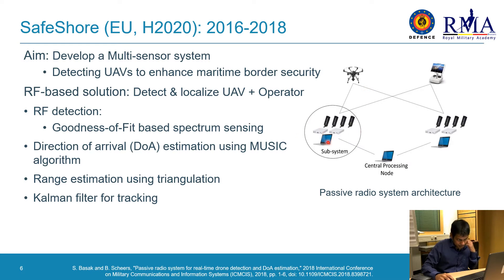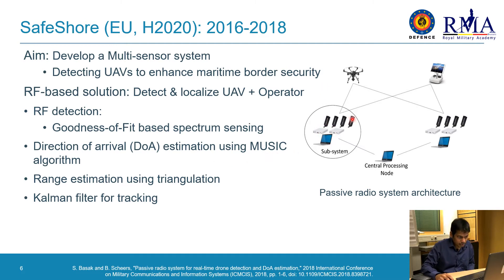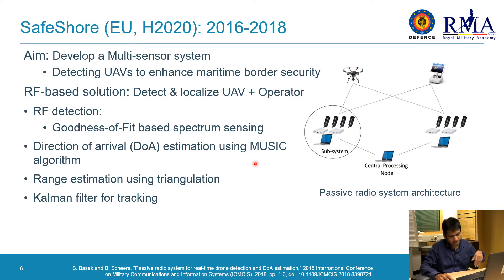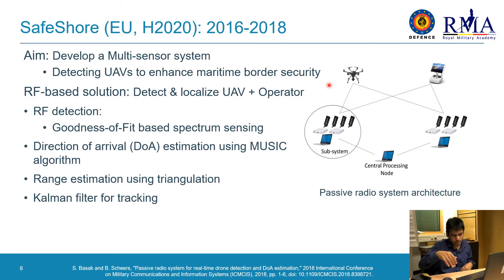We detected the presence of a drone using a goodness-of-fit based spectrum sensing algorithm. After detecting the presence of a drone via RF detection, we performed direction-of-arrival estimation using the MUSIC algorithm with the antenna array. After estimating the angle of arrival of both the drone and the controller, we estimated the range using a triangulation method. After obtaining the angle and range, we performed tracking.